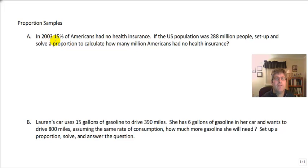In 2003, 15% of Americans had no health insurance. If the US population was 288 million people, set up and solve a proportion to calculate how many millions of Americans had no health insurance. So 15%, well that's the ratio or the fraction, 15 over 100.